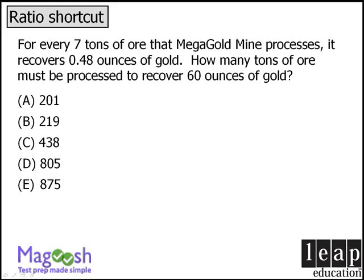You may find it useful to pause the video now and familiarize yourself with the question before continuing. In this question we are comparing tons of ore processed with ounces of gold recovered, so we'll set up our ratio as follows. The question tells us that for every 7 tons of ore processed, we can recover 0.48 ounces of gold.